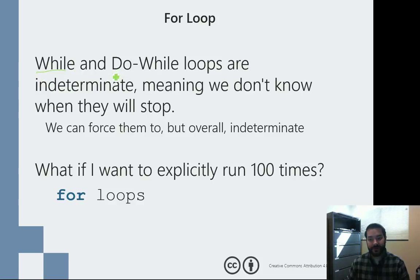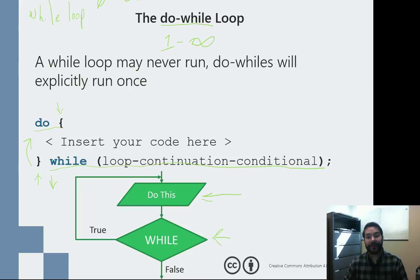Now, while loops and do loops are considered indeterminate. And it's because they can run an infinite number of times. Think about high, low. What happens if my user just kept on wanting to play? He just loved the fact that you're playing that number guessing game? Well, I don't know how many times the user is going to play the game. So in theory, it's indeterminate.